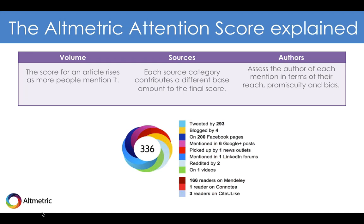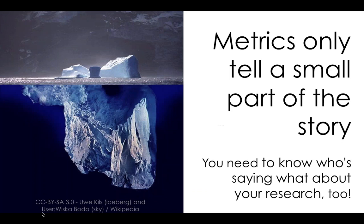In the middle of the donut you can see the Altmetric Attention Score. This attention score is a weighted count of the volume, sources, and authors who have mentioned your research online. It's not a measure of quality — it's just an indicator of the amount of attention you've received. For example, if a journal has been automatically tweeting out all its new papers, that will contribute less to the score than an influential academic who shares papers from lots of different journals. Some articles get attention for negative reasons — they might have made a mistake, be particularly controversial, or just have a funny title. That is why it's always important to remember that metrics only tell a small part of the story.